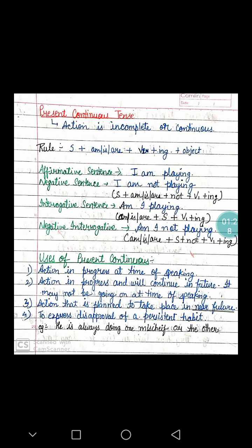The basic identification of this type of tense is -ing. The verb will have the -ing form. For example: speaking, talking, writing — all these verbs tell you that a work is going on. Ram is writing. What is Ram doing? Ram is writing, and while I speak, he is in the process of writing.